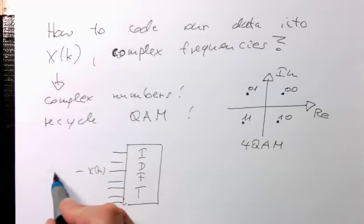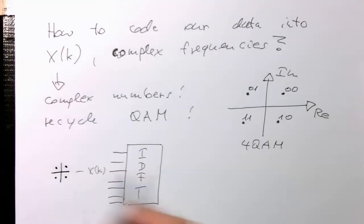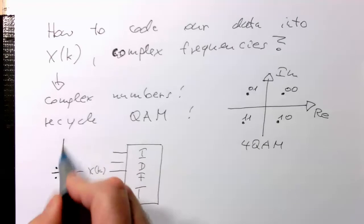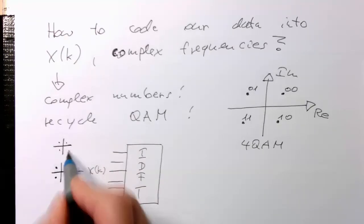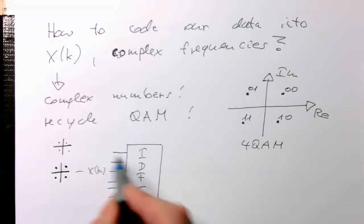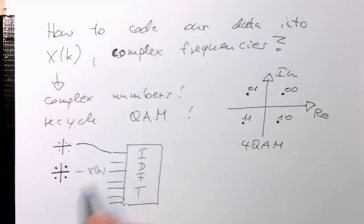And every X(k) is just coded via QAM. So we do that with all the different X(k)s. And we are able to put loads of data in it here. So we do this with all inputs, all X(k).